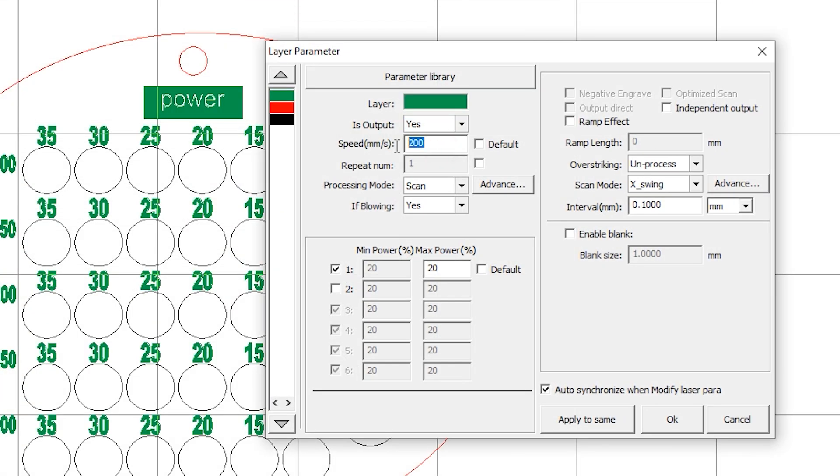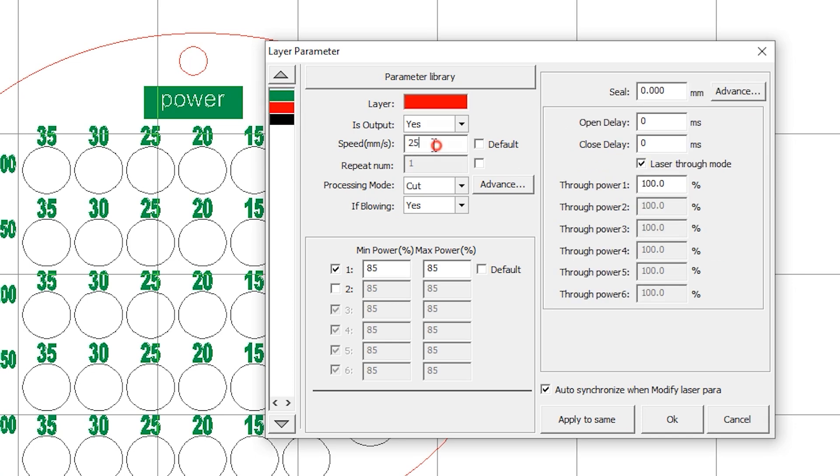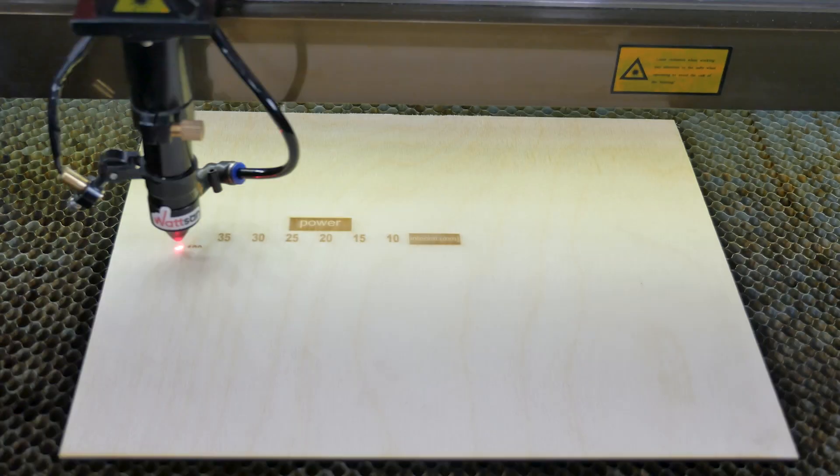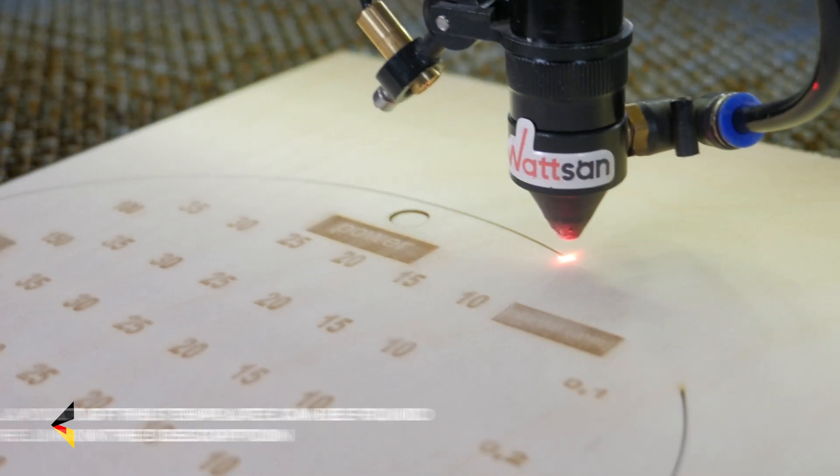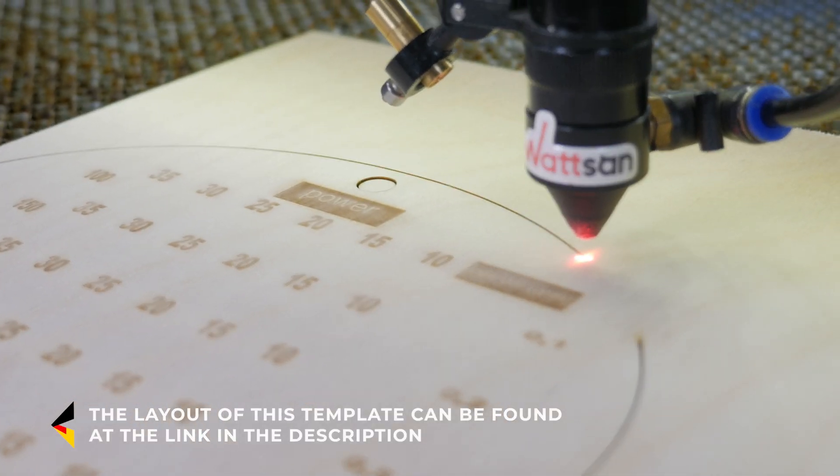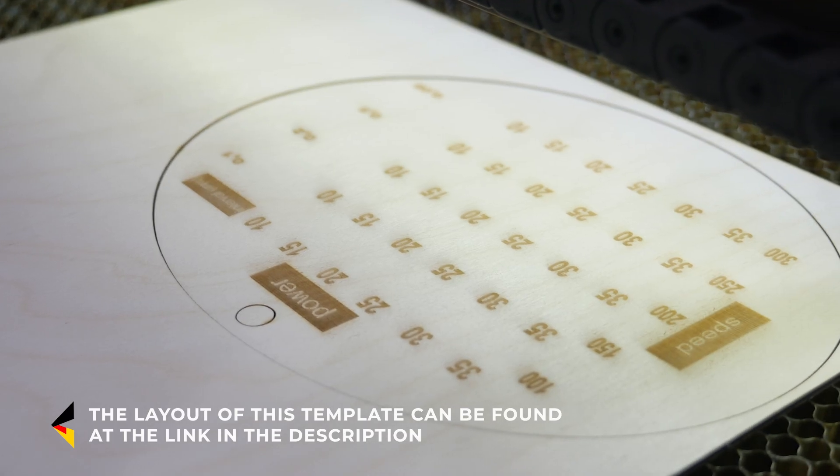Export the ready-made layout to RD Works. Mark the text and set the medium engraving parameters in order to mark out and then cut the workpiece. The layout of this template can be found at the link in the description below this video. Don't forget to subscribe and like it.